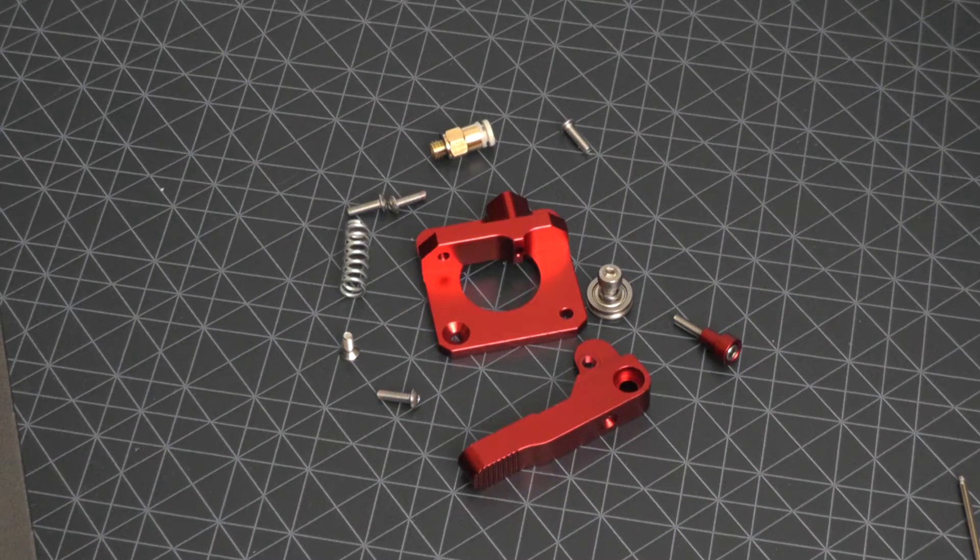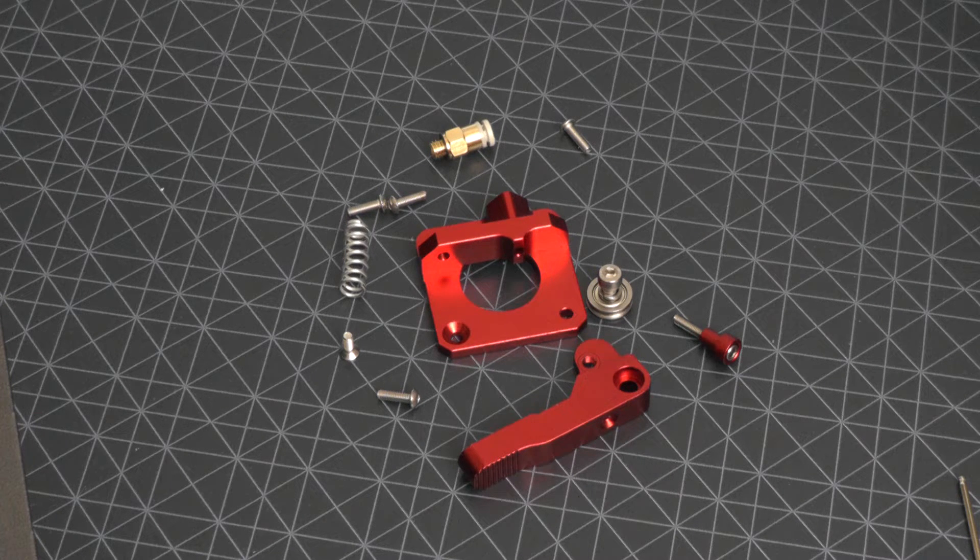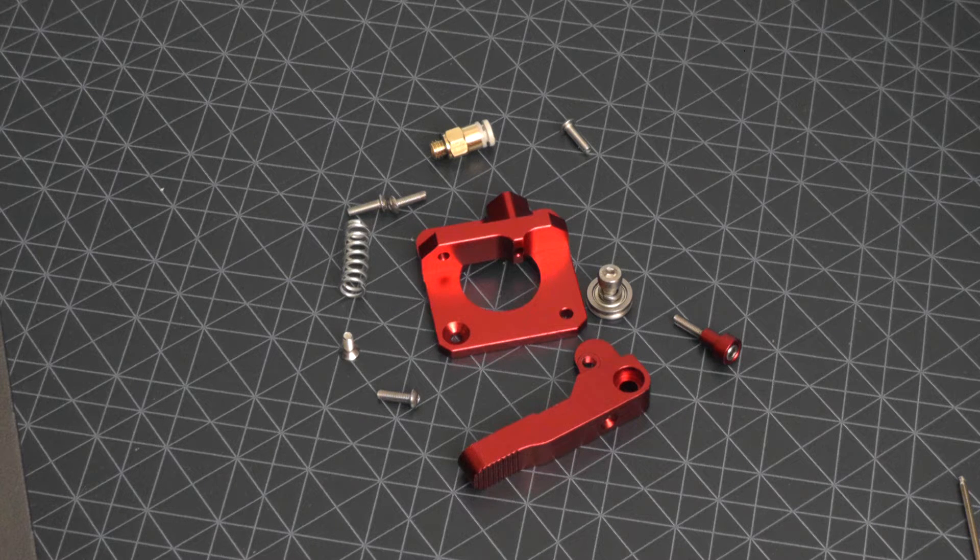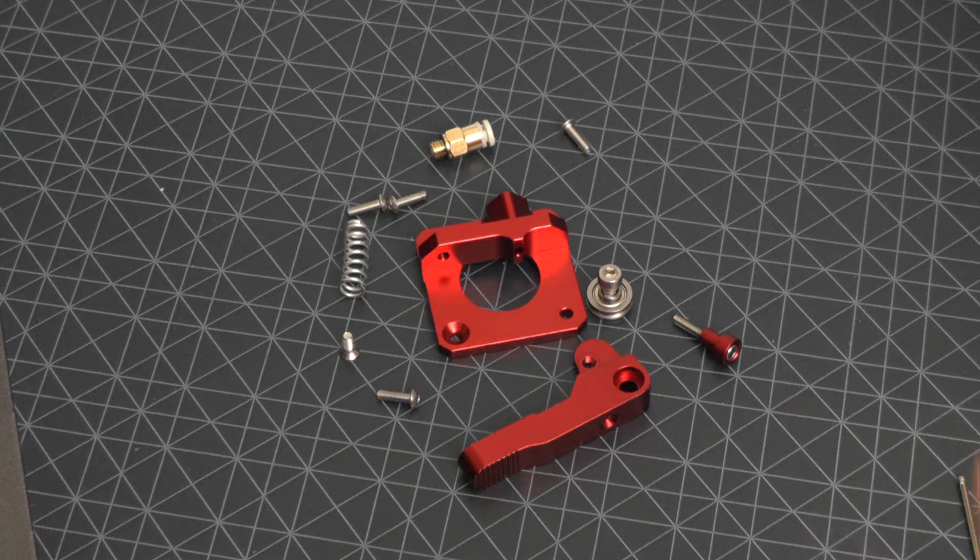Here we are with the new extruder. As I mentioned, this is a red anodized aluminum extruder. They're all the same. I've seen them at Banggood, Gearbest, Amazon, and I'll leave some links in the description. Let's take a look at how this is assembled. I've laid it out here the way it's going to go together.